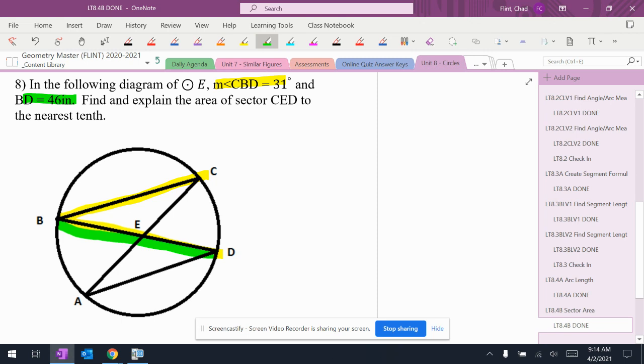And then it asks for the area of sector CED which is right here. Now this probably looks a little odd because you've got an angle that isn't the sector and you've got different things.